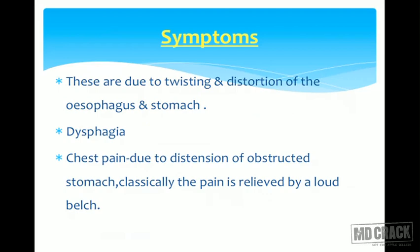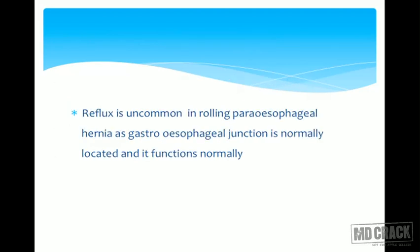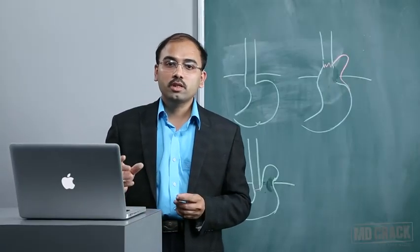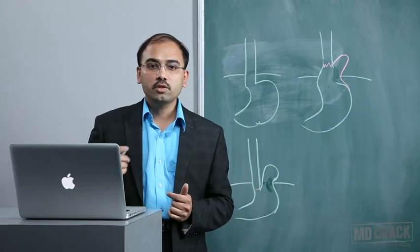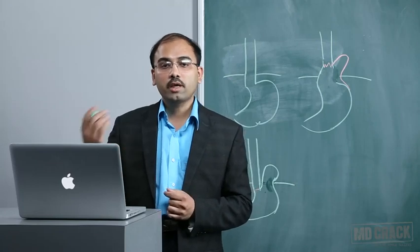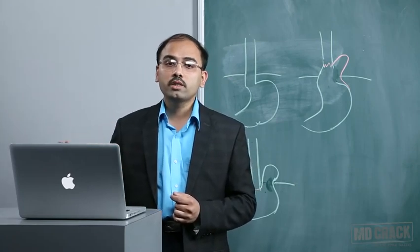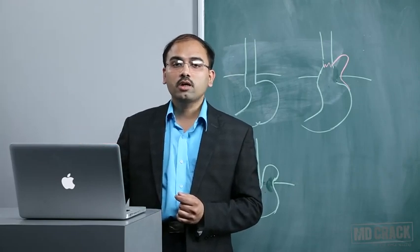Symptoms of hiatal hernias are due to twisting and distortion of the esophagus and stomach. The patient may present with dysphagia or chest pain related to retrosternal fullness from the herniated part. The stomach may become obstructed and pain is relieved by a loud belch. Importantly, reflux is uncommon in rolling paraesophageal hernia because the gastroesophageal junction is normally located and functions normally, whereas reflux is common in sliding hernia due to displacement of the cardioesophageal junction into the thorax, which impairs the normal protective mechanisms of the lower esophagus.